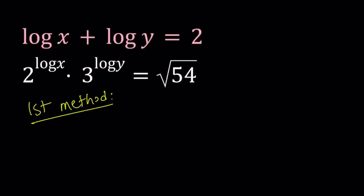So we have log x plus log y equals 2 and 2 to the power log x times 3 to the power log y equals square root of 54. So we're going to be looking for x and y values.